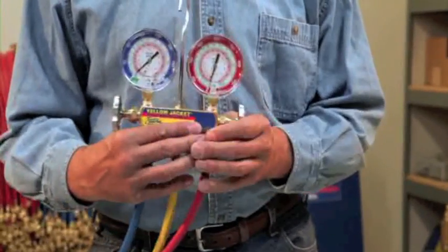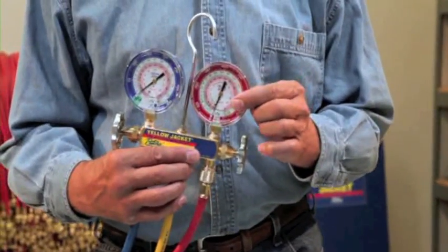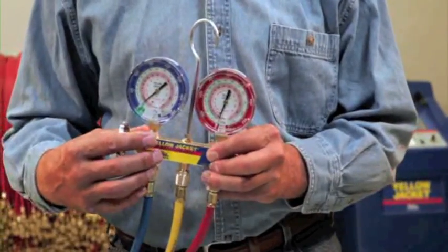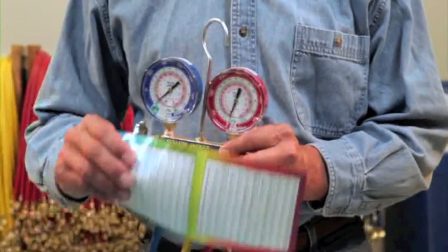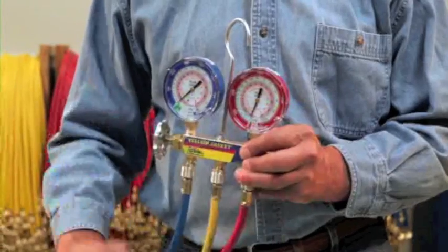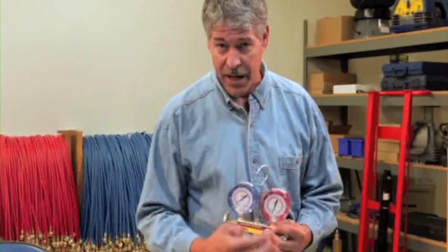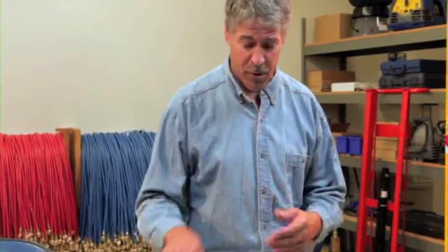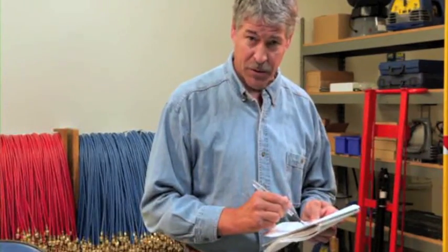Subcooling is determined by using the high side manifold gauge to measure the pressure of the condenser. This pressure must then be converted to a liquid saturation temperature using a PT chart or the temperature scales on the gauge. Next, measure the actual liquid line temperature using an accurate temperature probe and subtract it from the liquid saturation temperature. The result is the subcooling value.